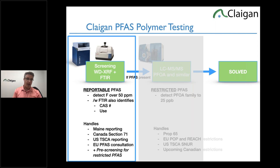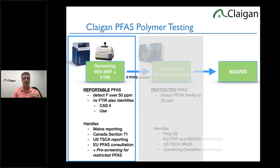I'm talking about intentionally added PFAS today — where the reportables are, and where your PFOA risks can be. Canada is going to have a Section 71 survey on this later this year. The final rule for TSCA PFAS reporting is likely to be published, meaning you'll likely have to report next year. There's also the European PFAS restriction consultation, which is critical — you need to get your uses covered between March and September. We use this for pre-screening for restricted PFOA risk as well.